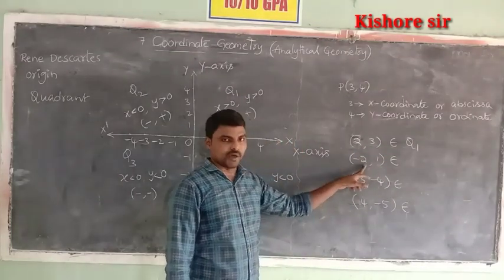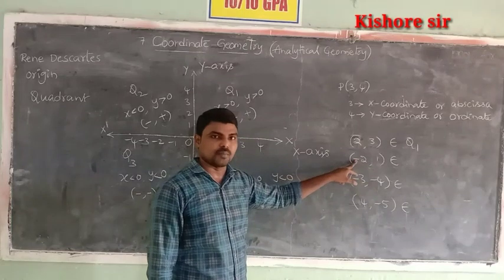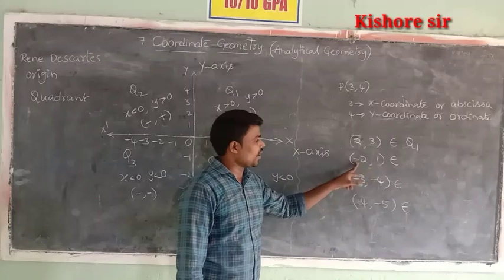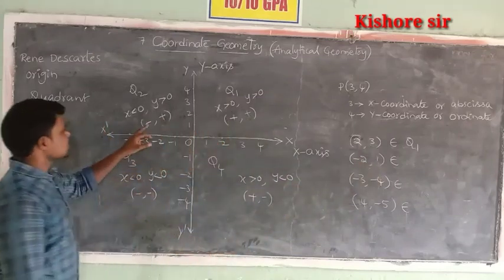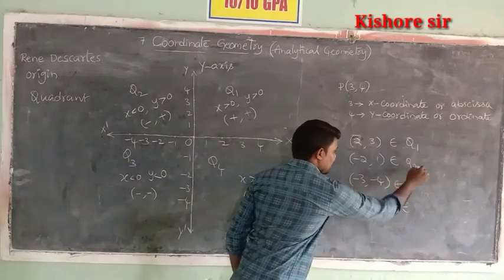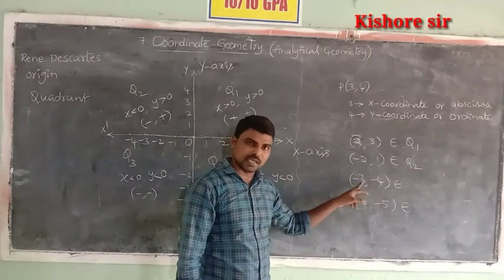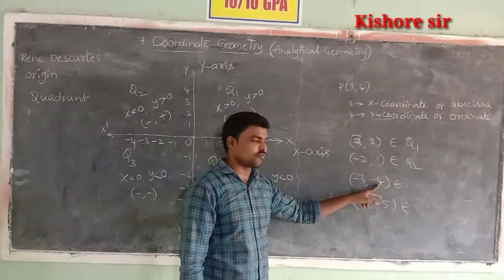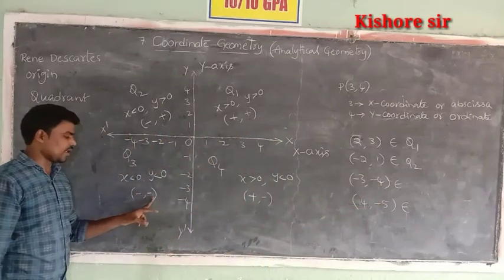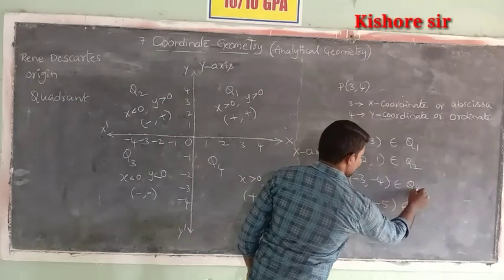Now observe the second point (−2, 1). The sign of the x-coordinate is negative (minus) and the sign of the y-coordinate is positive. So (−, +) belongs to Quadrant 2, meaning (−2, 1) belongs to Quadrant 2. Next, the third point (−3, −4): the sign of the x-coordinate is minus and the sign of the y-coordinate is also minus. Both are negative, so (−, −) belongs to Quadrant 3. Therefore (−3, −4) belongs to Quadrant 3.